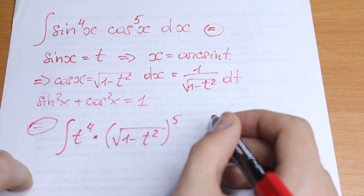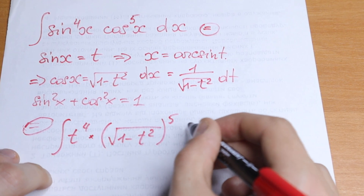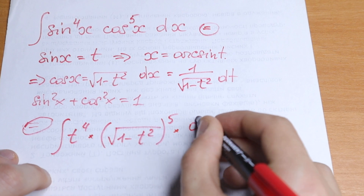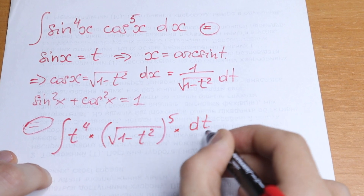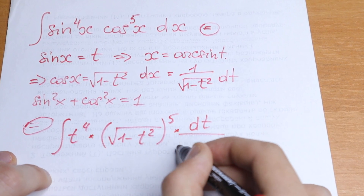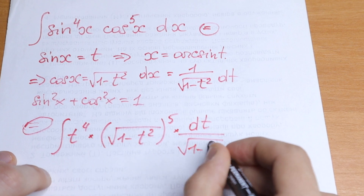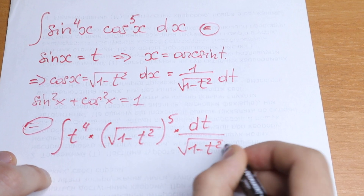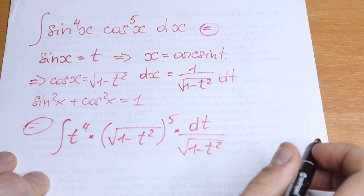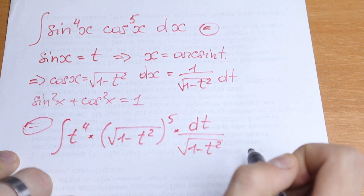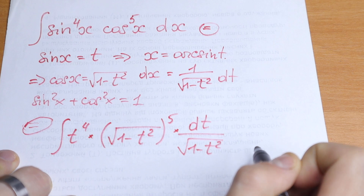And our dx equals 1 divided by the square root of 1 minus t squared, multiplied by dt. So we are dividing by the square root of 1 minus t squared and multiplying by dt.